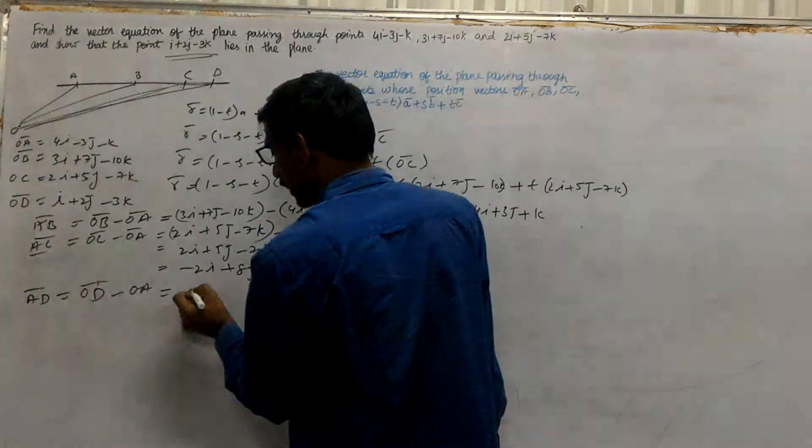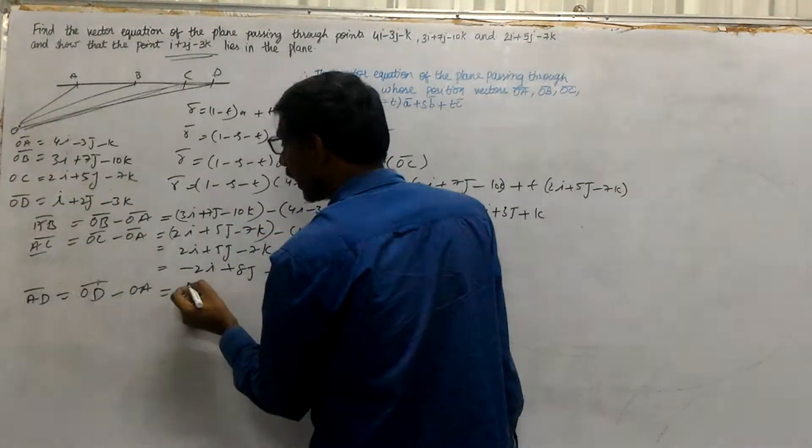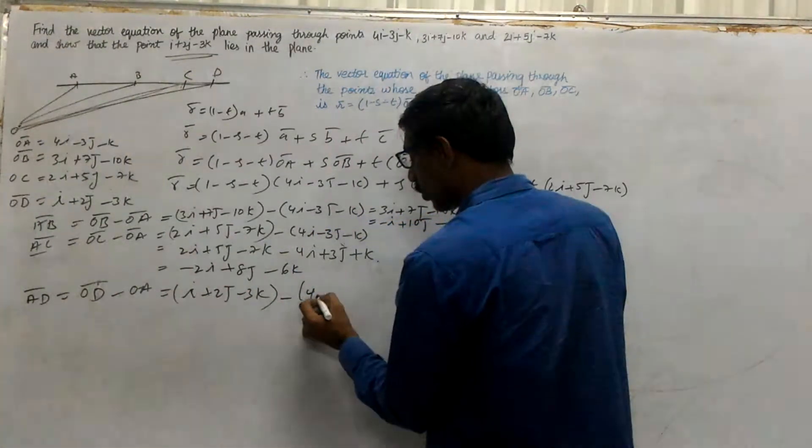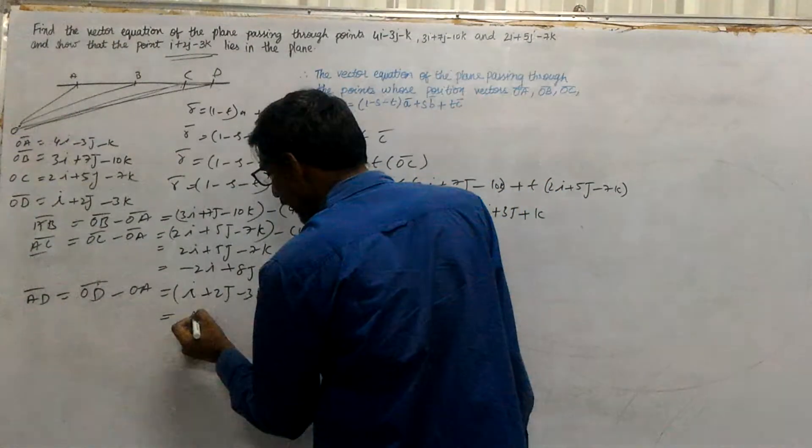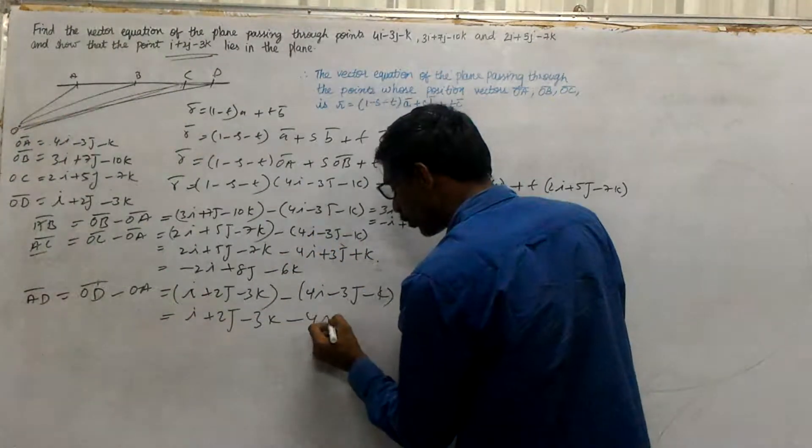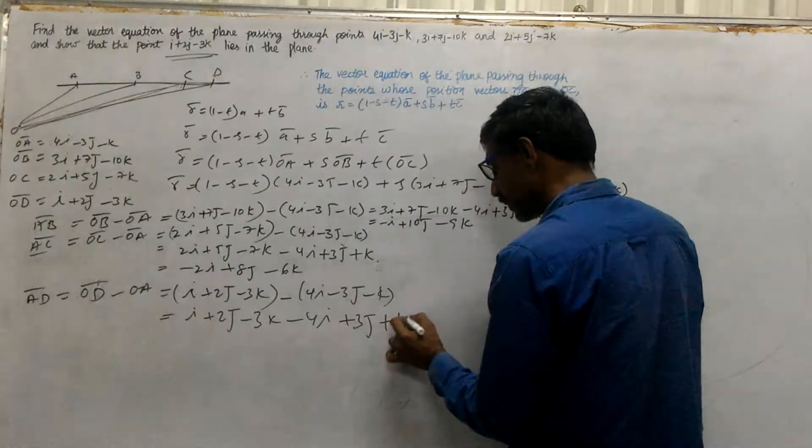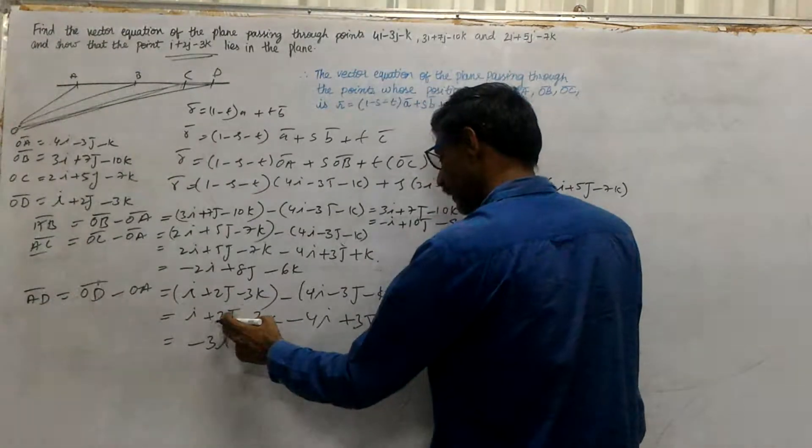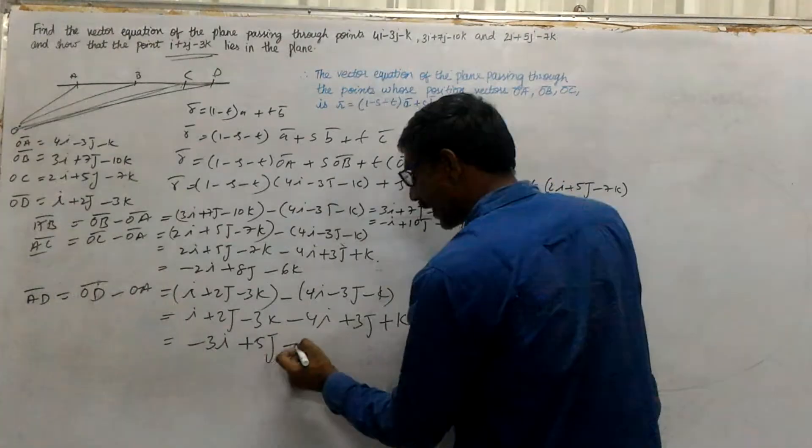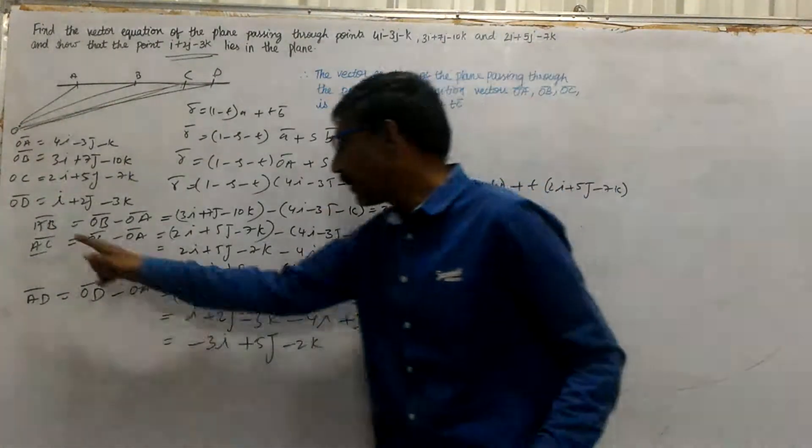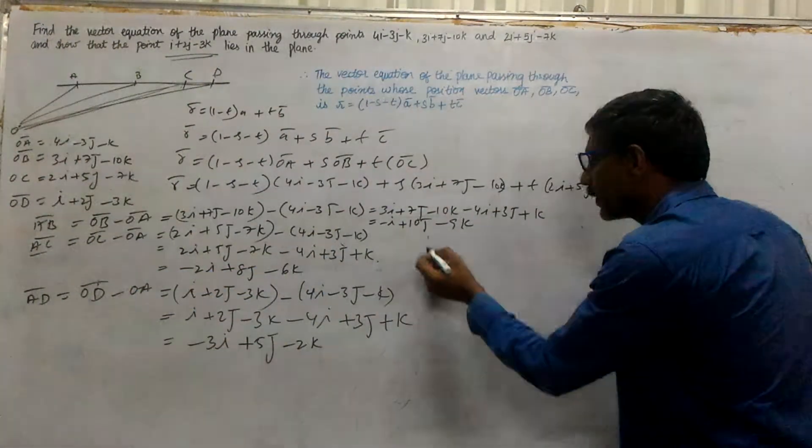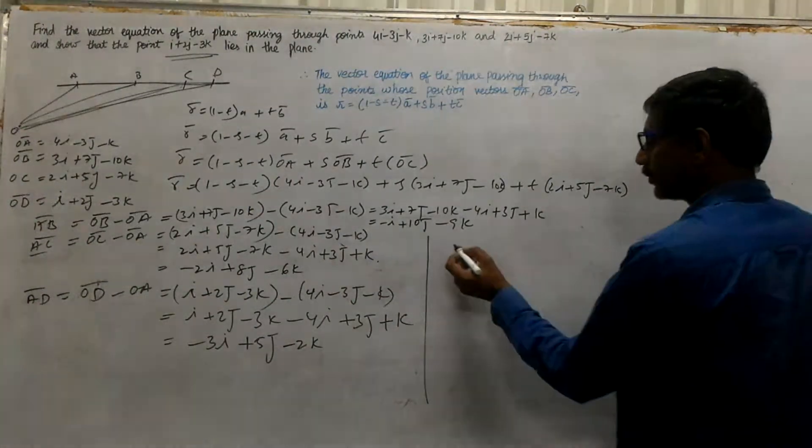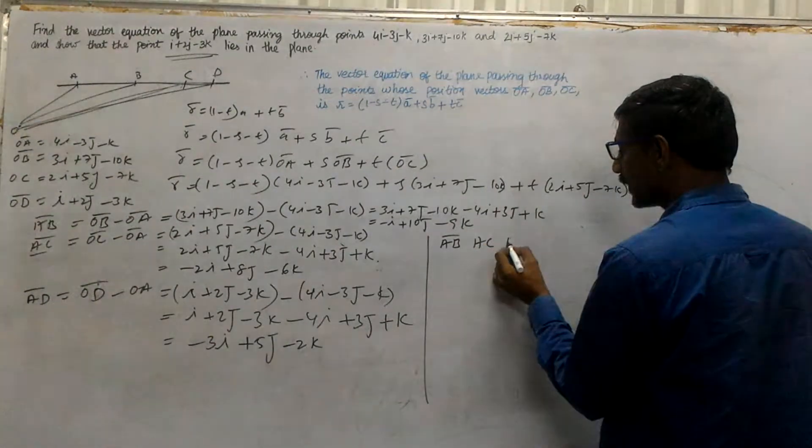AD equals i+2j-3k minus (4i-3j-k) equals i+2j-3k minus 4i plus 3j plus k, which simplifies to -3i+5j-2k. Now we have AB, AC, and AD ready. We'll determine if they are coplanar by computing the determinant.